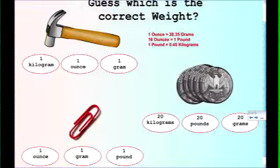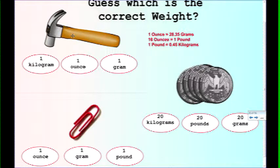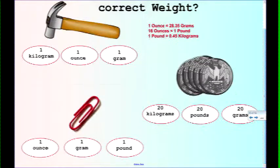Guess which is the correct weight? That hammer. If we know ten pennies equals one ounce. Is that going to be an ounce? Try another one it says. How about one kilogram? Good job! So one hammer equals one kilogram. Let's try these quarters. Pounds? Try another one it says. Grams? Good job! Now this one is not going to be a pound. It could be an ounce. It could be a gram. But it's definitely not a kilogram or a pound. So let's try gram. Good job! So a gram is a little bit smaller than an ounce.